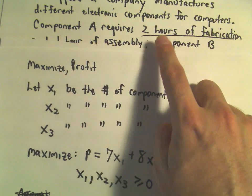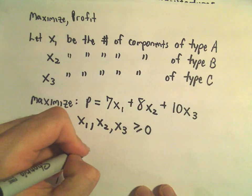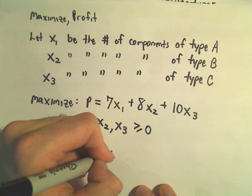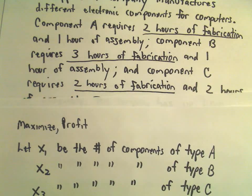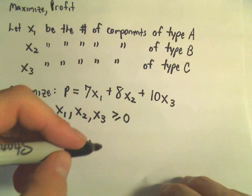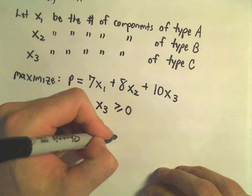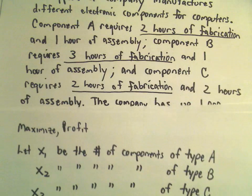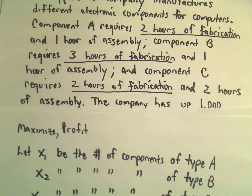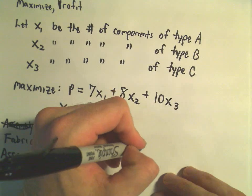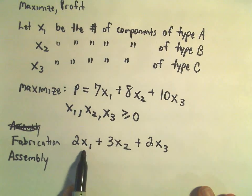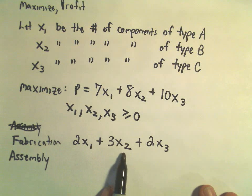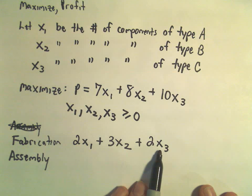It takes 2 hours for each one of type A, so we'll take 2 times x₁. It takes 3 hours for component B, so we'll have 3 times x₂. And it takes 2 hours for component C, so we'll have 2 times x₃. If we make x₁ of type A, x₂ of type B, x₃ of type C...